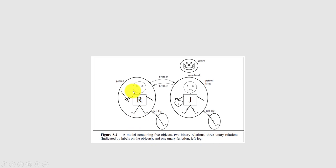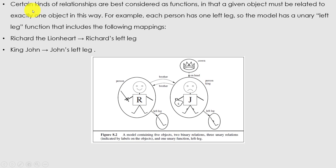Here is the model containing five objects, two binary relations, and three unary relations. Certain kinds of relationships are best considered as functions, in that a given object must be related to exactly one object. For example, each person has one left leg, so the model has a unary left-leg function that includes mappings: Richard the Lionheart → Richard's left leg; King John → John's left leg.